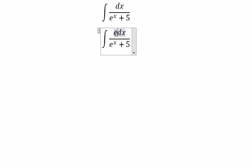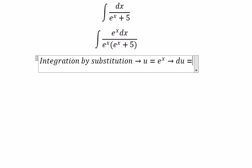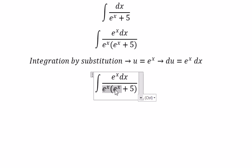We need to multiply with e to the power of x on numerator and denominator. Next, we need to use integration by substitution. So we put u equal to e to the power of x, du equal to e to the power of x dx. So this one we change for u, this one we change for du.